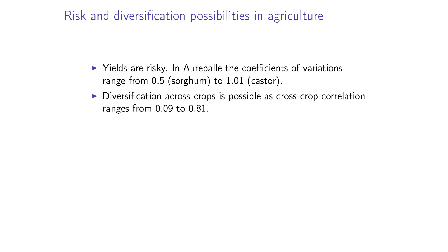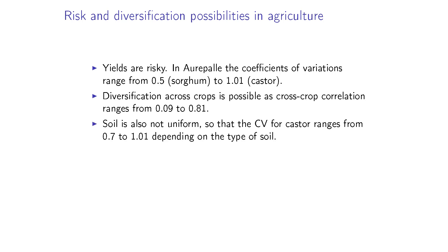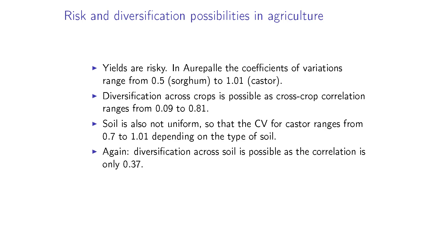But they can diversify over crops. Looking at cross-crop correlations, those numbers range from 0.09 to 0.81. At 0.09, the yields on one type of crop are almost independent of yields on another. Soil isn't uniform either. Even taking castor alone, they can plant it in one type of soil or another — each type is risky with coefficients of variation from 0.7 to over 1 — but with a correlation of only 0.37 across soil types, there are pretty good diversification possibilities.